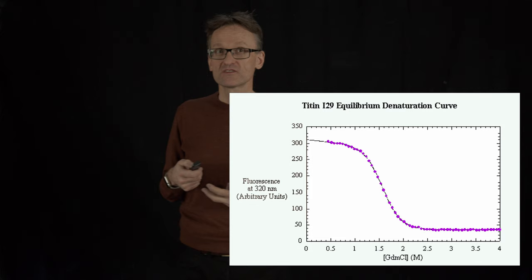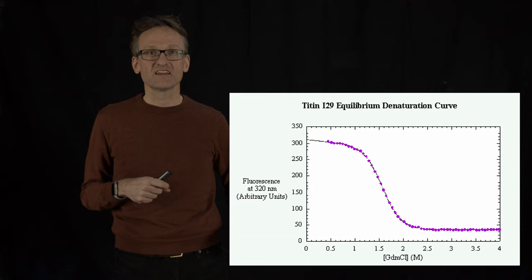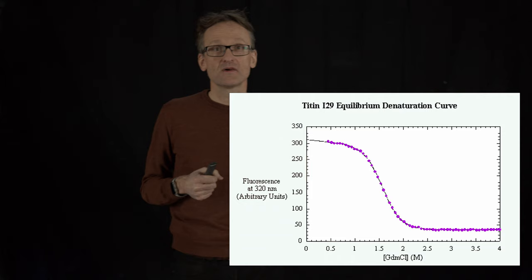In this particular case it's a CD spectroscopy experiment — I'll show you that on the next slide. We're seeing here on the one side in this graph that the protein is completely native, and then I'm adding guanidinium hydrochloride, moving to the right, and that's going to unfold the protein.